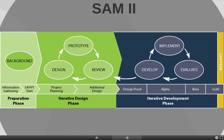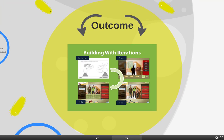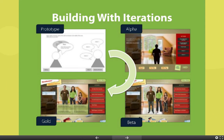So, this is SAM-2 — again, what we just discussed: the preparation, iterative design phase, and iterative development phase. What are some outcomes? The outcomes are, in fact, building with iterations. We talked about the four segments that were under the development phase: the prototype, alpha, beta, and gold.